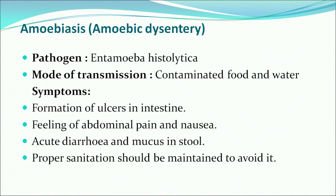The next protozoan disease is amoebiasis, commonly called amoebic dysentery. The pathogen responsible is Entamoeba histolytica. Mode of transmission is again contaminated food and water — many diseases are caused by contaminated food and water, so we need to take care. Symptoms include formation of ulcers in the intestine, abdominal pain and nausea, acute diarrhea and mucus in stool. Proper sanitation should be maintained to avoid it.